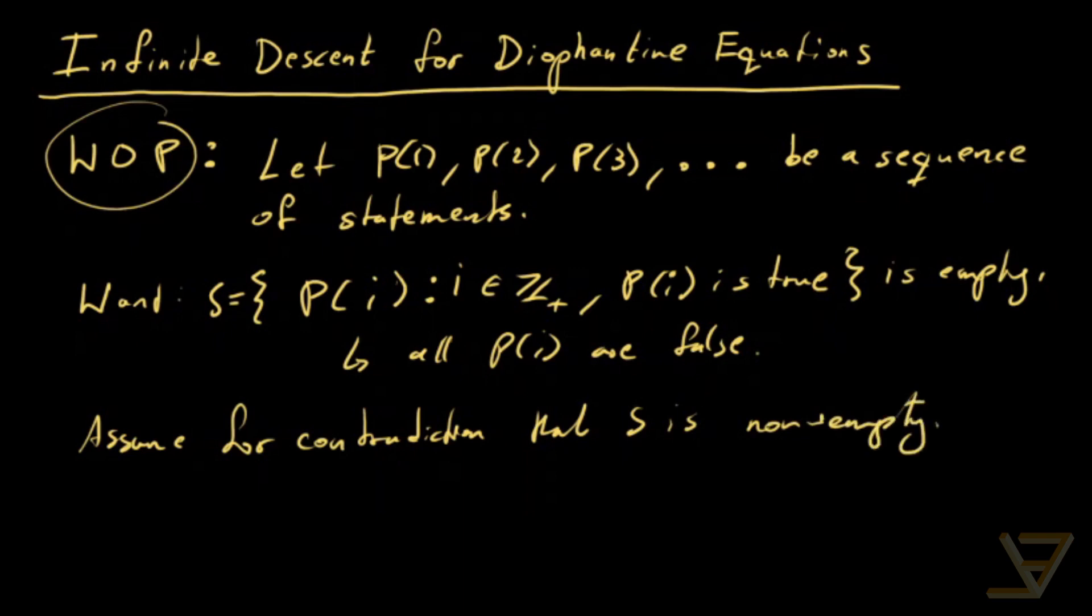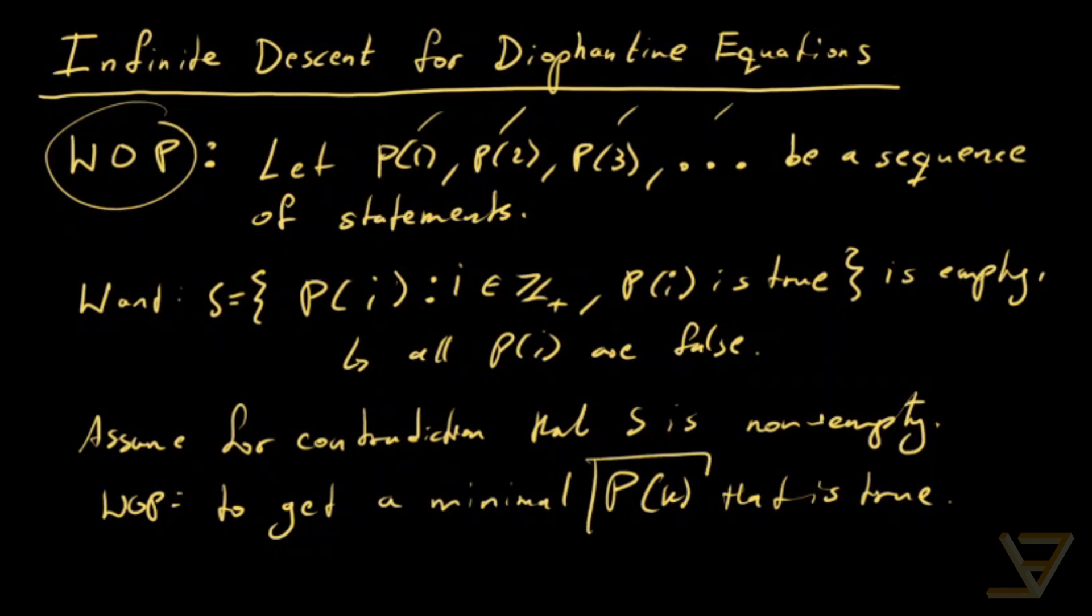that this set S is not empty. So what that allows us to do is use the well-ordering principle to get a minimal element. Minimal P_k that is true. So out of P1, P2, P3, and so on, there's a minimal P_k that is true.